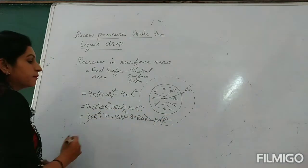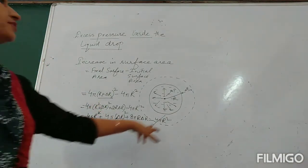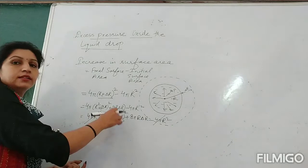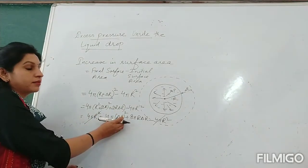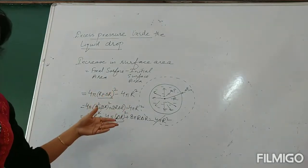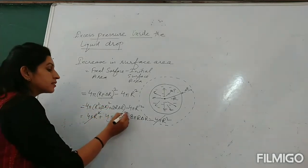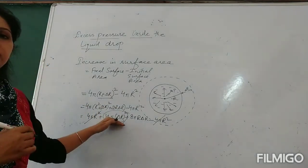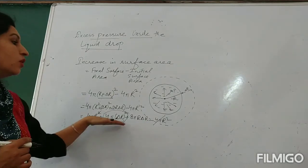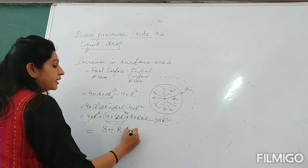The 4πR² terms cancel. Now, delta r is very small — the increase in radius is very very small — so we can neglect the δr² term because it will be further small. For example, if it is 0.01, when squared it becomes 0.0001, which is negligible. Neglecting this term, the increase in surface area comes out to be 8πR·δr.